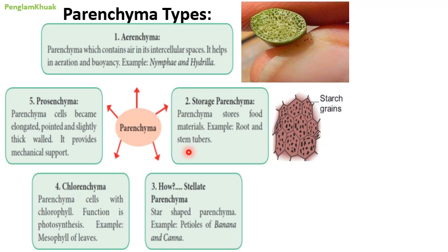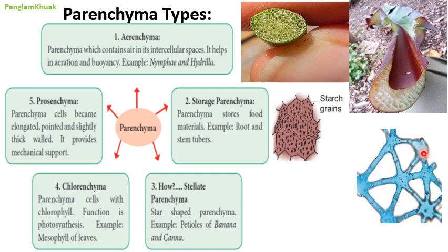Storage parenchyma is found in stem tubers like potato and Colocasia. Number three is stellate parenchyma — star-shaped parenchyma cells. If you see the picture, they look just like a star shape and are mostly found in the petiole of banana and in Canna. Those parenchyma cells which look like a star shape are called stellate parenchyma.